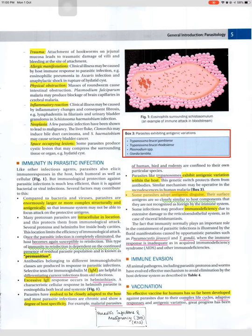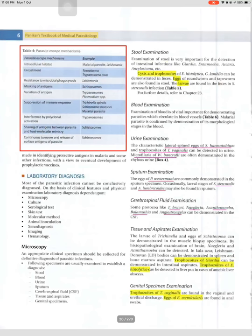Some parasites adopt antigenic disguise — their surface antigens closely resemble host components and are not recognized as foreign by the immune system. Some infections produce immune deficiency due to extensive damage to the reticuloendothelial system, as in visceral leishmaniasis. Opportunistic parasites such as Pneumocystis jirovecii and T. gondii cause florid manifestations when the immune response is inadequate, as in AIDS. All animal pathogens including parasitic protozoa and worms have evolved effective mechanisms to avoid elimination by the host defense system. Parasites exhibiting antigenic variation include Trypanosoma brucei gambiense, T. brucei rhodesiense, Plasmodium spp., and Giardia lamblia.